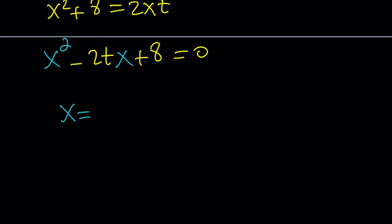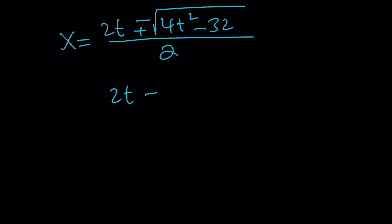From here, x equals negative b plus minus the square root of b squared, which is 4t squared, minus 4ac. a is 1, so 4 times 8 is 32. And now, we can simplify this a little bit. Because 4, you can take out the 4. The square root of 4 is going to be 2. So, it's going to be 2 times the square root of t squared minus 8. And everything is divided by 2, which is good because now we can simplify it and write it as t plus minus the square root of t squared minus 8.